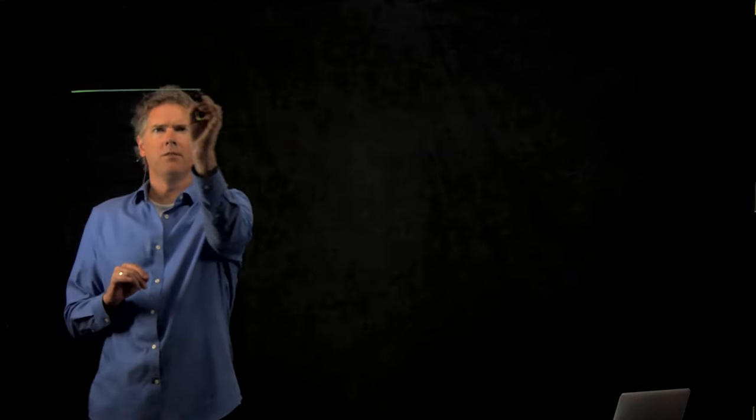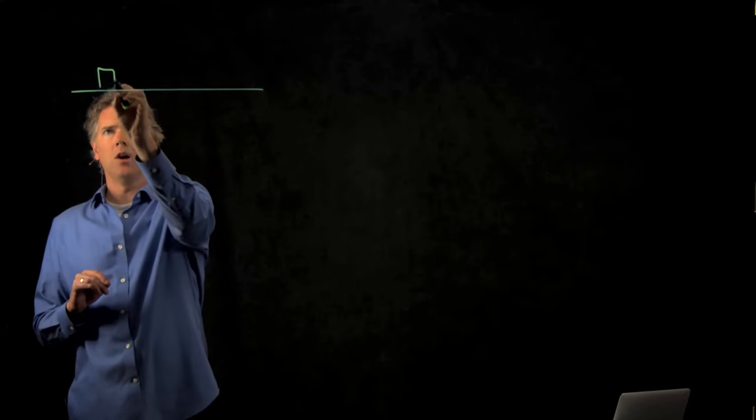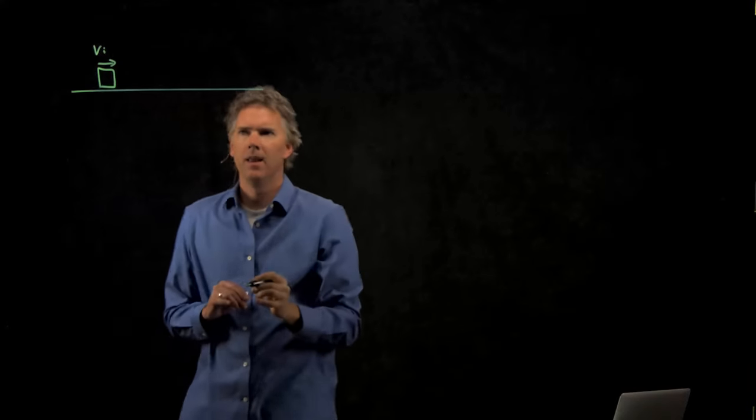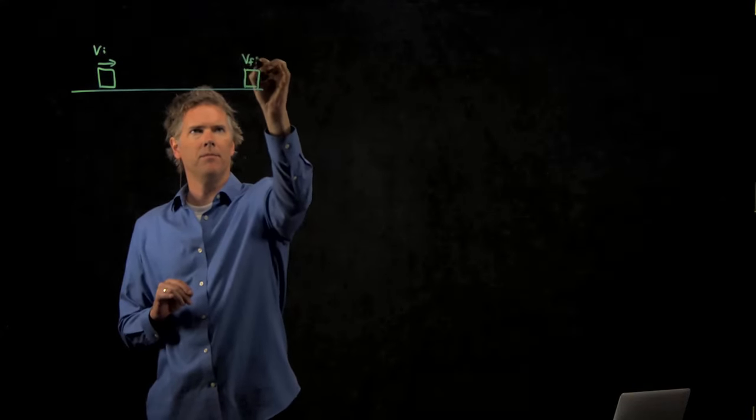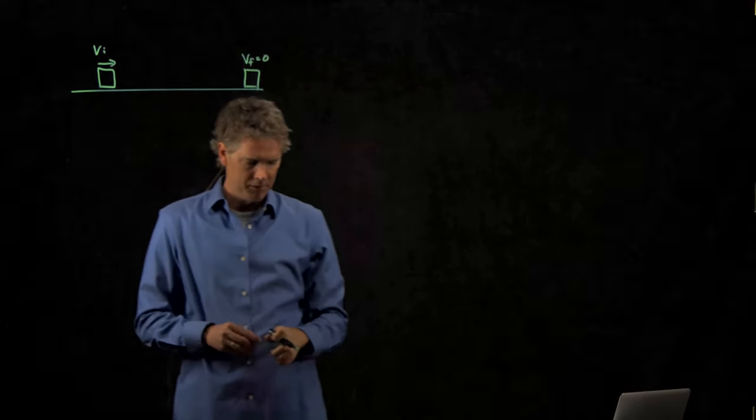So let's see how this works. If I have a box that's sliding along a surface and it's going at some vi and then it eventually comes to a stop, so vf equals 0,